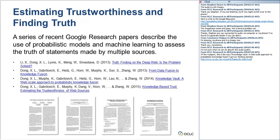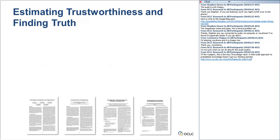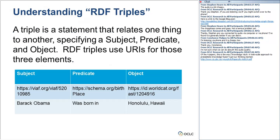One question I would have is: what's a triple? We're going to use the word triple a lot. A triple is a statement that relates one thing to another. By convention, it's in the order of a subject, a predicate, and an object. RDF — the Resource Description Framework — is a way to model data. RDF triples still have that subject, predicate, object pattern, but they use an identifier or URI for those three elements. In one example, there's an RDF triple with a VIAF identifier, a schema.org identifier for the predicate, and a FAST ID for the object.